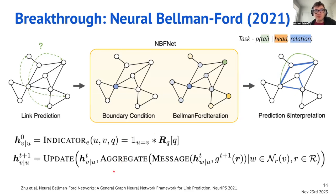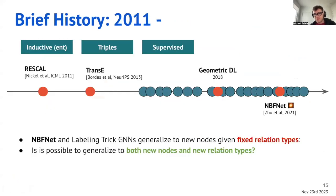Mathematically, we have an indicator function for how we initialize entities — we initialize the query node with the query relation from a matrix, and every other node starts at zero. Then we run message passing and have node representations conditioned on the starting node. After NBFNet, the open question was: can we generalize to graphs with completely new relation types? NBFNet still needs relation embeddings layer by layer, so it can transfer between subgraphs of Wikidata or Freebase that share the same relationships, but it cannot transfer between Wikidata and Freebase or completely unseen graphs.